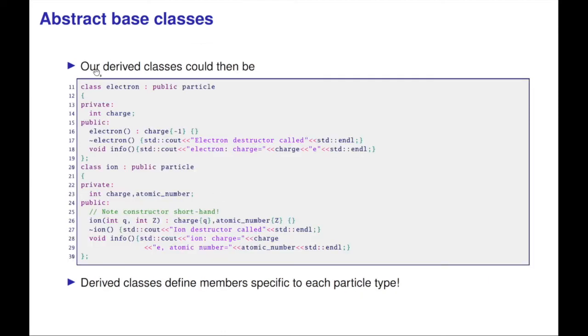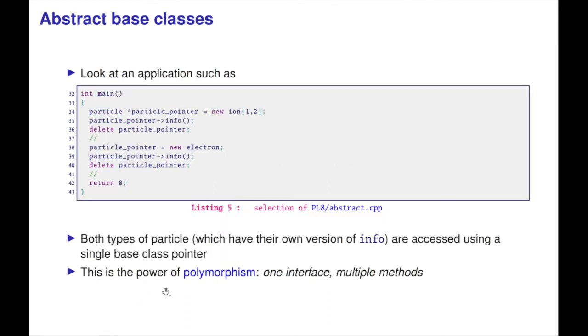We could have, for example, a derived class for an electron which inherits particle. It has its own charge and lots of other good stuff. I could have an ion which contains both charge and atomic number. You can see I re-declared the functions. These functions I don't have to tell are virtual—they are overridden. Derived classes define members specific to each particle type.